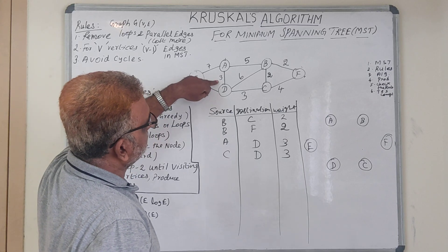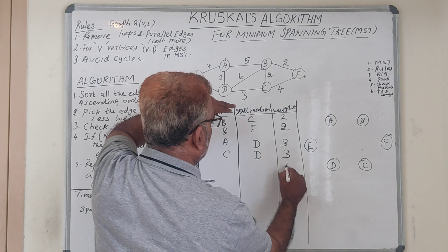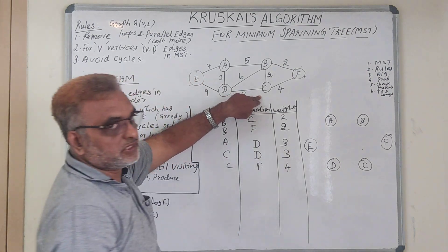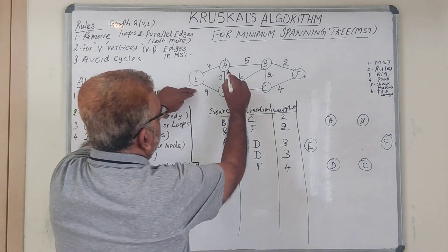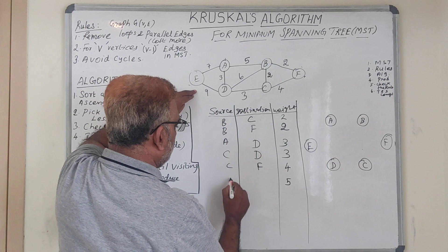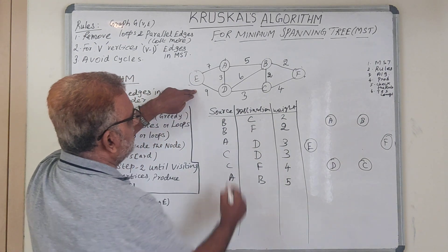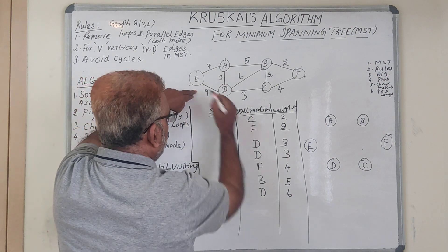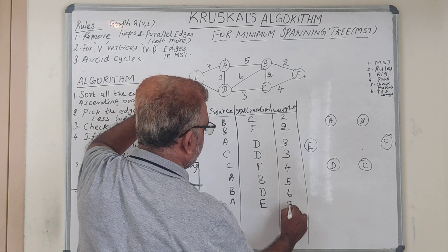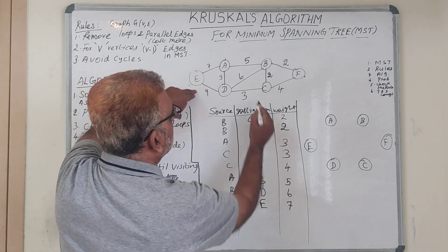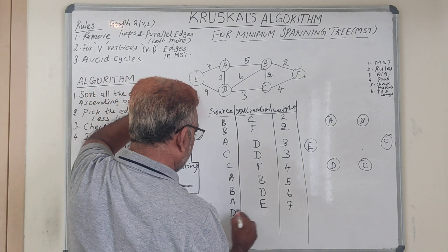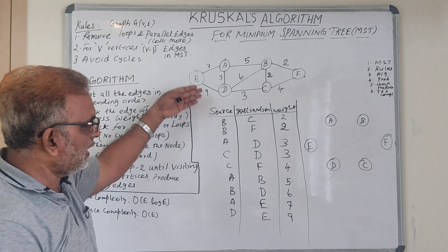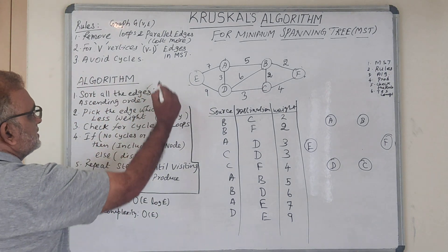The next weight is four: edge c-to-f with weight four. Then five: edge a-to-b with weight five. Then six: edge b-to-d with weight six. Then seven: edge a-to-e with weight seven. Then nine: edge d-to-e with weight nine. These are all edges sorted in ascending order — that completes step one.